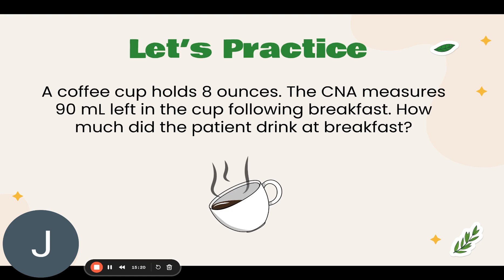Let's practice. A coffee cup holds eight ounces. The CNA measures 90 milliliters left in the cup following breakfast. How much did the patient drink? First, convert eight ounces to milliliters: eight times 30 equals 240 milliliters, which is the full serving. Then subtract the 90 milliliters left in the cup, giving 150 milliliters. So the patient drank 150 milliliters of coffee at breakfast.